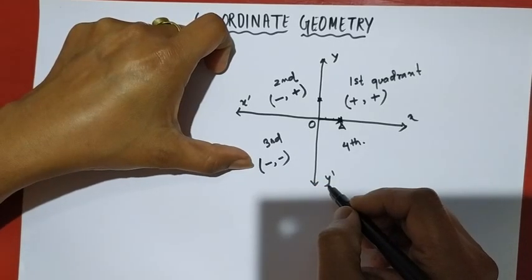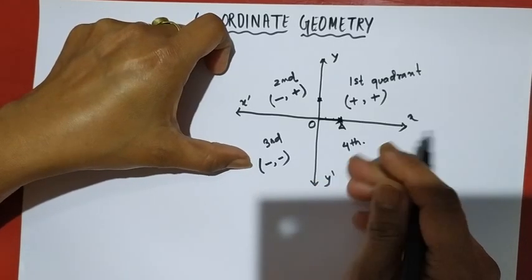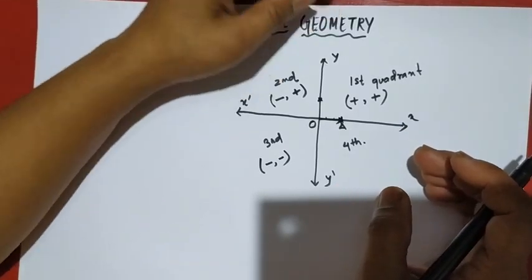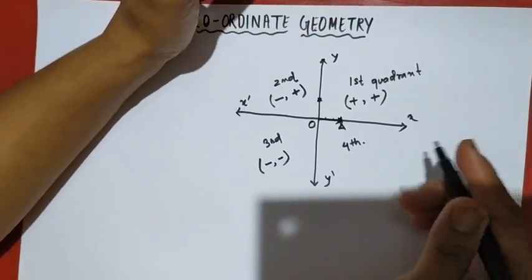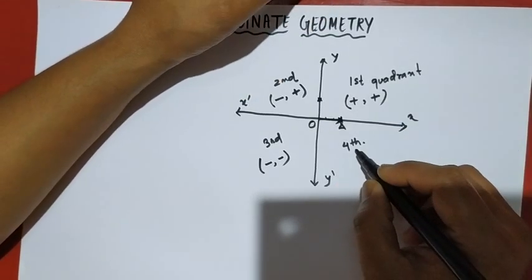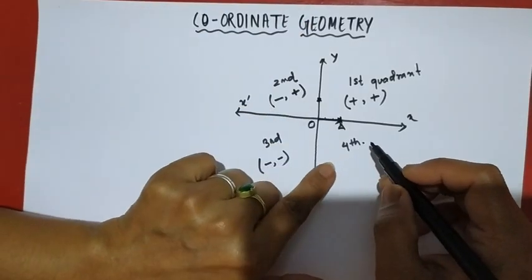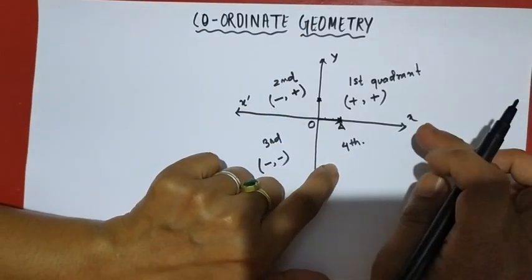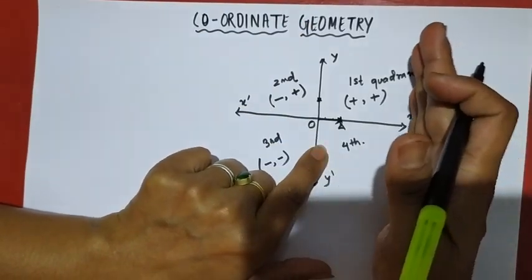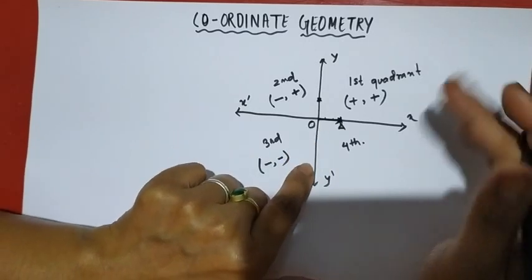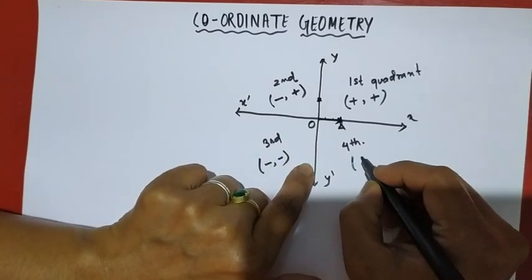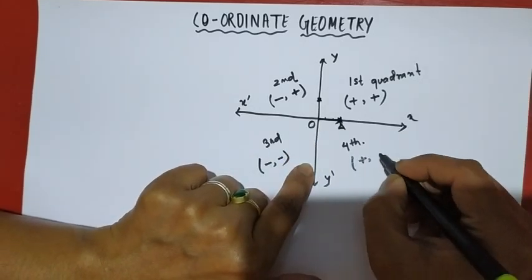For the third quadrant, if you have the fourth quadrant, we have x plus and the value of y minus. So, d plus minus.